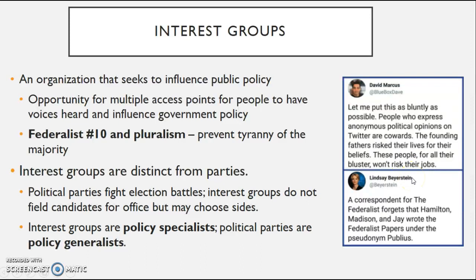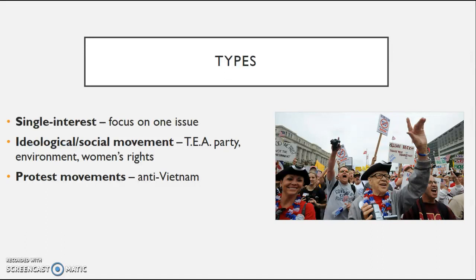The different types of interest groups are various. You have single-interest groups where they're focused on one specific issue. For example, if you're the NRA, you're going to be looking at restricting gun control — looking for more pro-gun measures and fighting anti-gun measures in all 50 states and also at the national level.